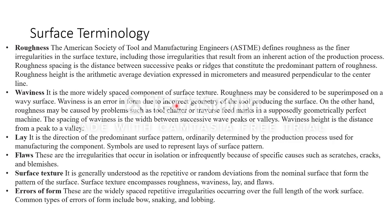For example, if you are manufacturing a circular disc and because of a tool problem you are not getting a circular disc, you will definitely get an elliptical disc. Because of that elliptical disc, there is a high chance of waviness occurring over the job. On the other hand, roughness may be caused by problems such as tool chatter or traverse feed marks in a supposedly geometrically perfect machine.